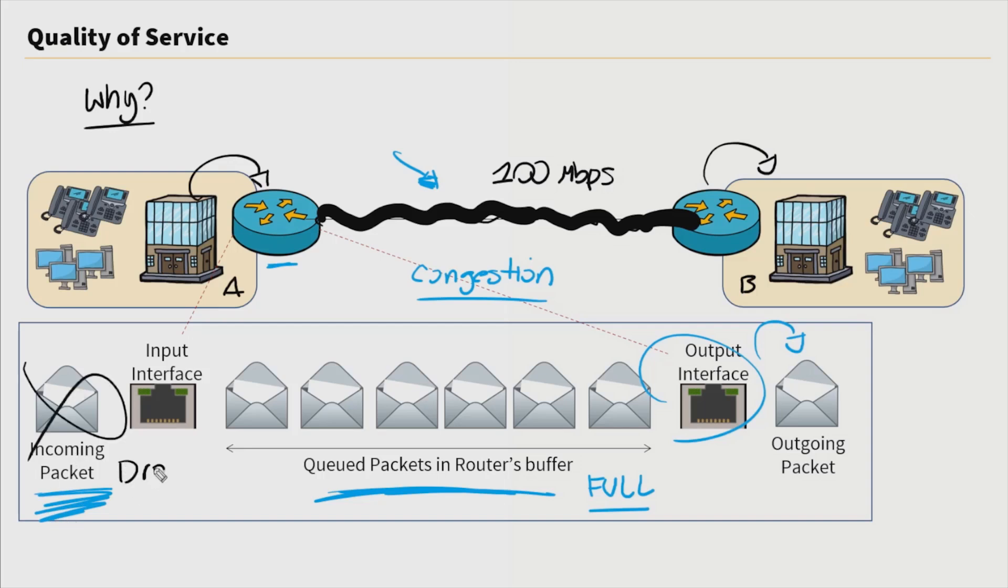The router inside site A will begin to queue packets in its buffer. Here we are temporarily storing packets so eventually we can forward them to their appropriate destination. But what happens if this buffer or this queue becomes full, but we still get incoming packets attempting to go over the wide area network? These packets would be dropped. Now with quality of service, it allows us to control what traffic will be dropped in the event there is congestion. That's the beauty of QoS, that we're not just randomly dropping any type of traffic. We're being selective in what kind of traffic we will drop.